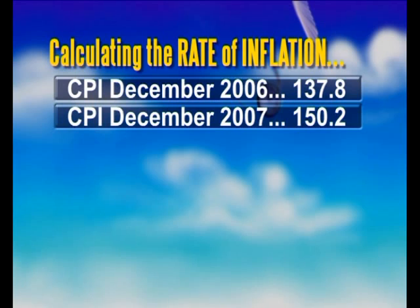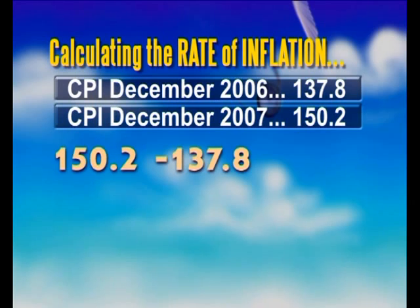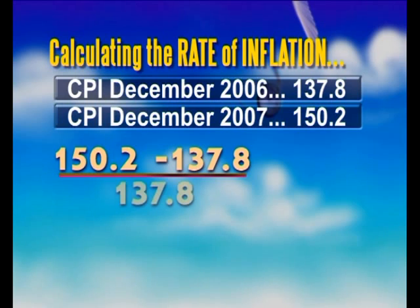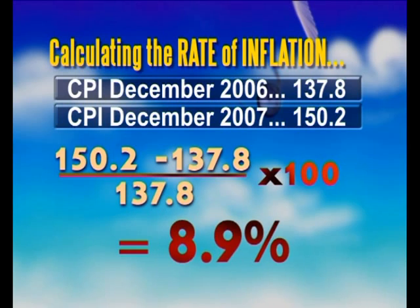So to calculate the rate, subtract the December 2006 figure from the December 2007 figure and divide that total by the December 2006 figure. Multiplying the result by 100 gives us the month-on-month inflation rate. For December 2007 it was 8.9%.